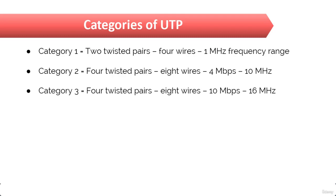Category 3 has four twisted wire pairs with three twists per foot. This type can handle transmissions up to 16 MHz. It was popular in the mid-1980s for up to 10 Mbps Ethernet. But now Category 3 is limited only to telecommunication equipment and is again obsolete for networks.